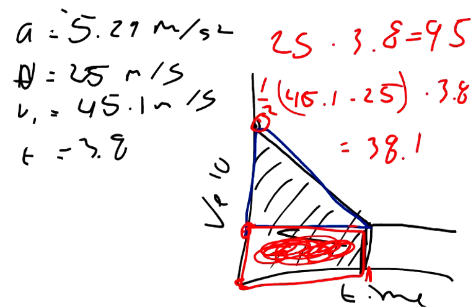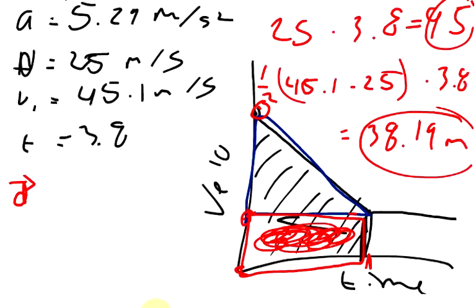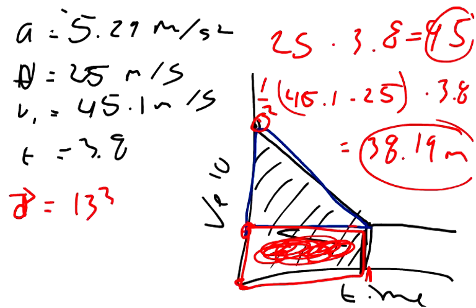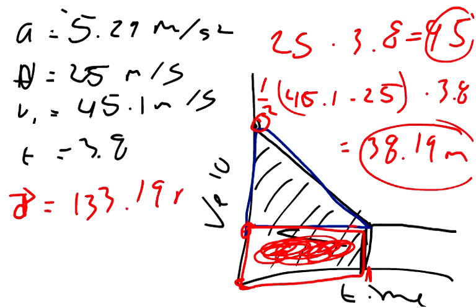We can add our 95 and our 38.19, and we will get the displacement equals 133.19 meters. So that should be everything. We got our acceleration and we got our displacement.